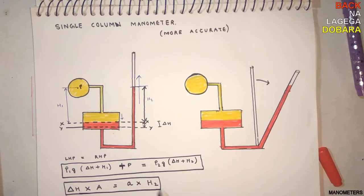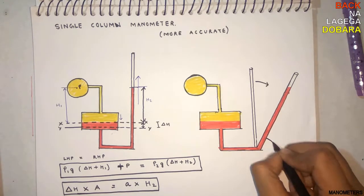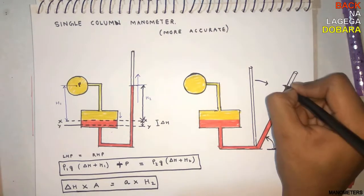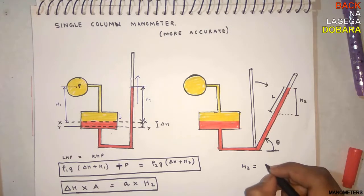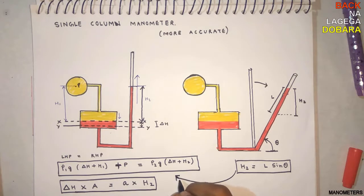And the inclined single column manometer is even more accurate because for the same distance H2, the heavy liquid has to move a larger distance L. That is more accurate reading. The only difference is H2 is equal to L sine theta. Just put this in the first equation and you're good to go.